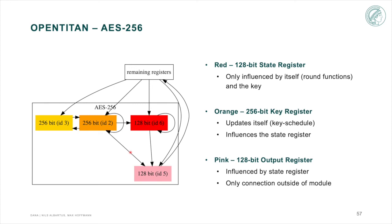Since it is influenced by both key and state register, we suspect that the final AES round, which is different from the remaining rounds, is computed on the fly when the register is written. The remaining 256-bit register, in yellow, is just from this graph of unknown functionality.